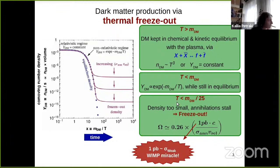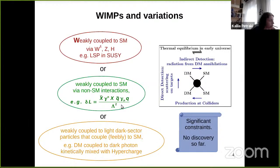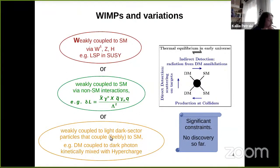This simple calculation gives the observed dark matter relic density if the annihilation cross-section times relative velocity is of the order of one picobarn. Because this is the cross-section of the weak interactions, this was deemed to be the WIMP miracle. One class of models is WIMP models — particles coupled to the weak interactions of the standard model, such as the lightest supersymmetric particle. It is also possible that dark matter couples via other unknown non-standard-model interactions parameterized via effective operators.